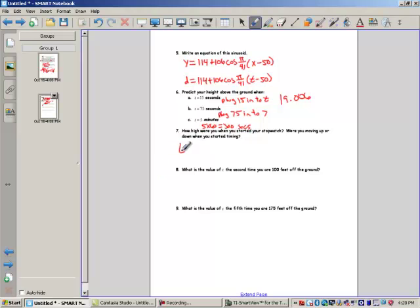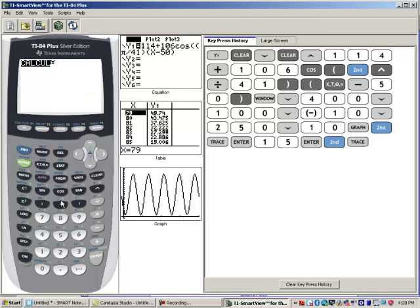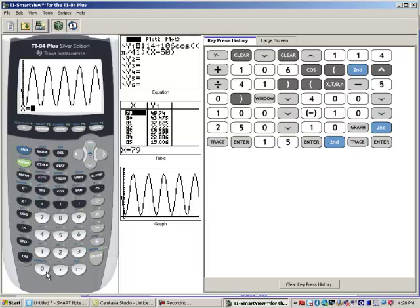How high were you when you started your stopwatch? Were you moving up or down when you started timing? Well that is where t equals zero. So let's go back and look at that. t equals zero. That's going to be a value when t equals zero. So I'll go to value zero.